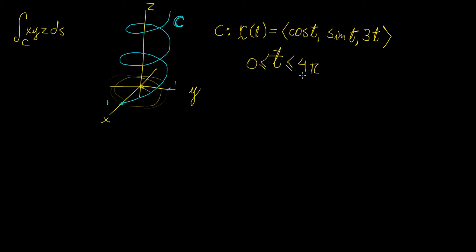We're given that the helix completes two full revolutions because it goes from 0 to 4π, so it goes around twice. That is how long the curve is going to be, and we're going to evaluate the line integral of this function within these limits.